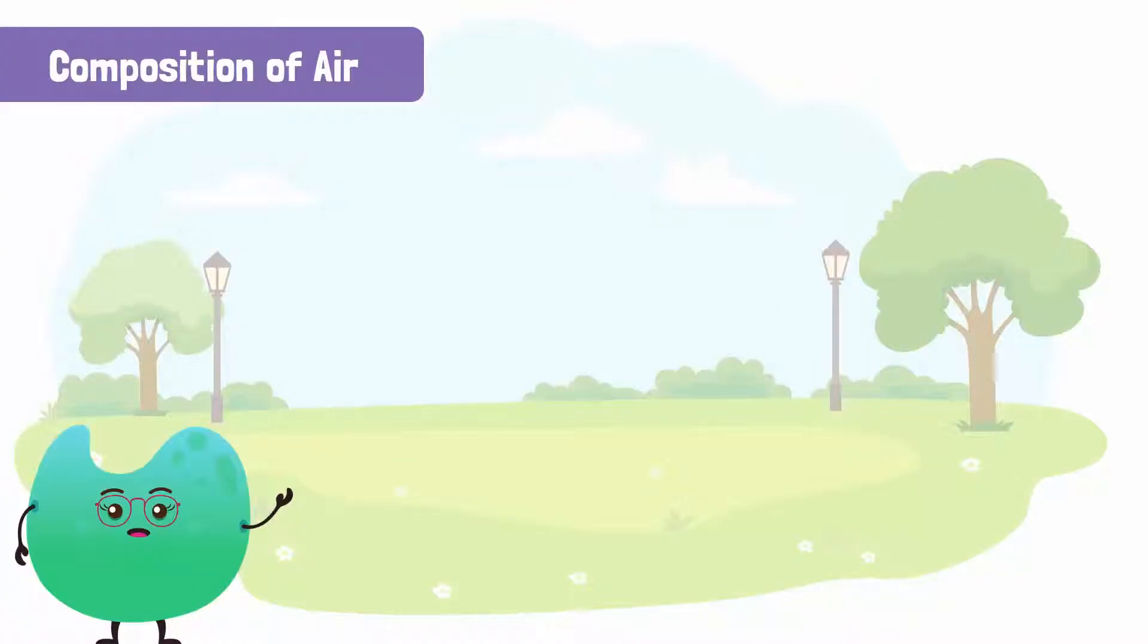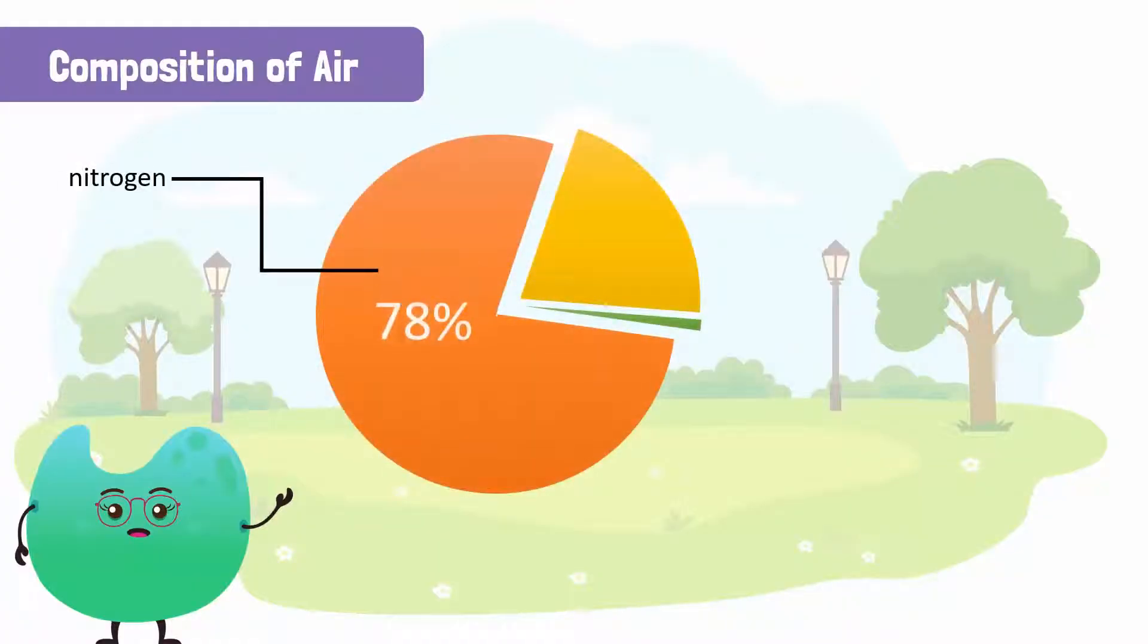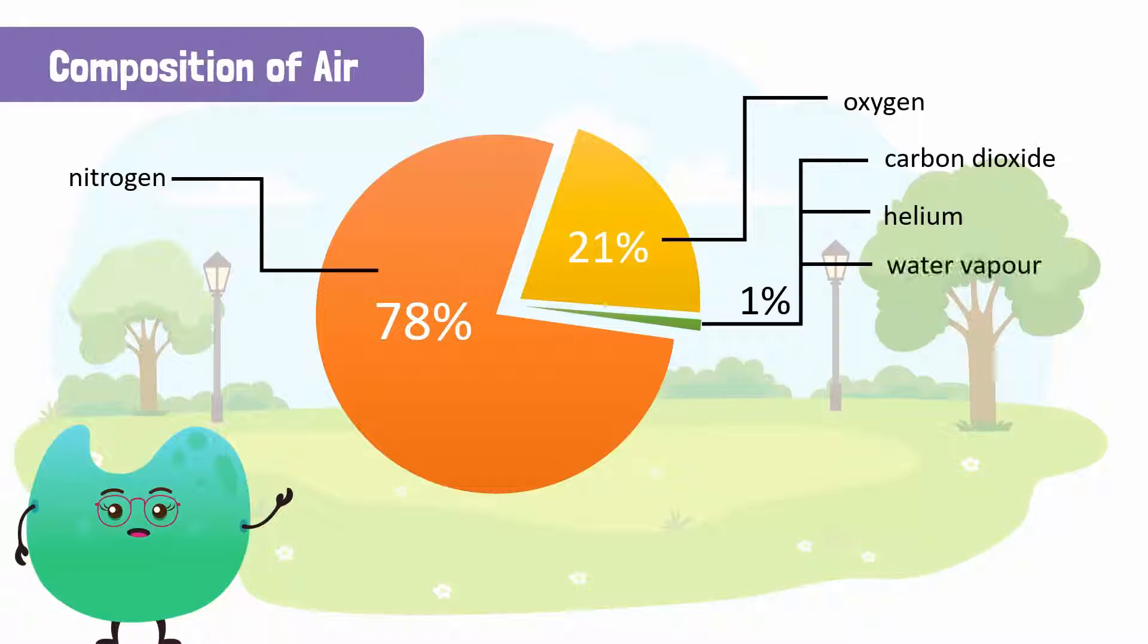Nitrogen makes up approximately 78% of the air around us. Oxygen makes up 21% and the remaining 1% contains other gases such as carbon dioxide, helium, water vapor and rare gases. In this lesson, we will learn about the properties and uses of these gases in our lives.